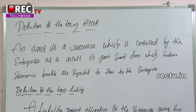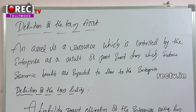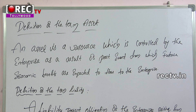Definition of the term 'asset': an asset is a resource which is controlled by the enterprise as a result of a past event, from which future economic benefits are expected to flow to the enterprise. Additional points: a resource not within the control of the entity cannot be treated as an asset — for example, an employee is not an asset to an employer because he may leave anytime. Also, an asset need not be only long-term; inventory and short-term investments are also assets.